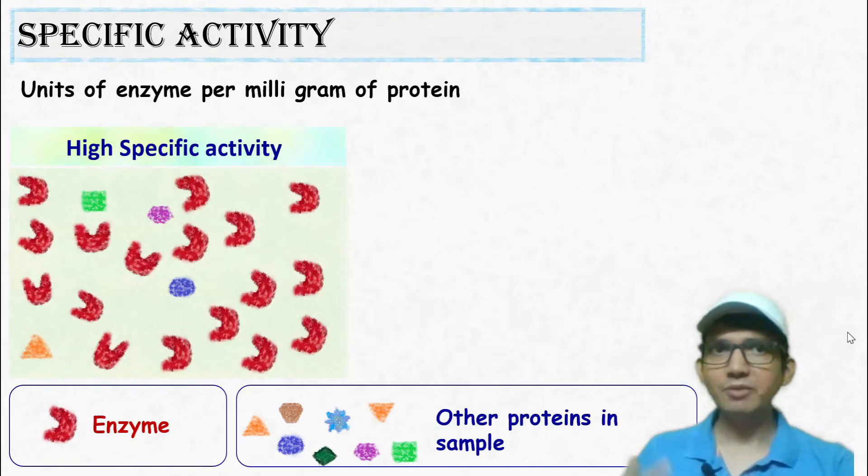High specific activity means the units of enzyme present in the given sample are more, while the other proteins are less in number.